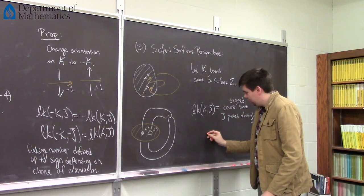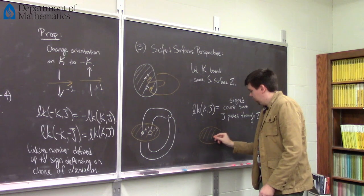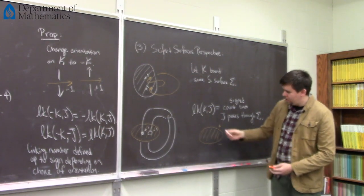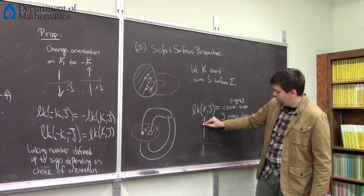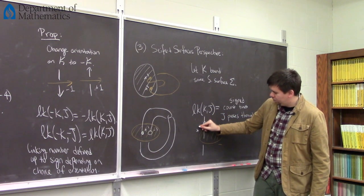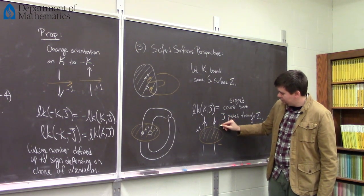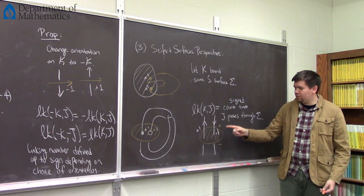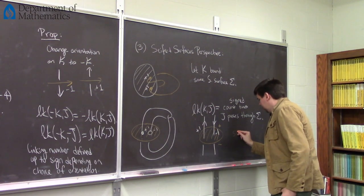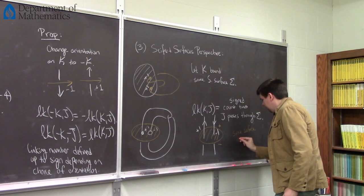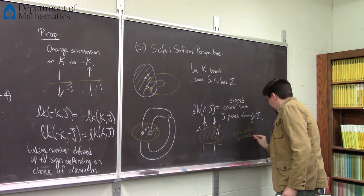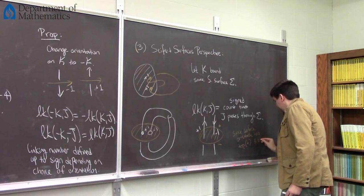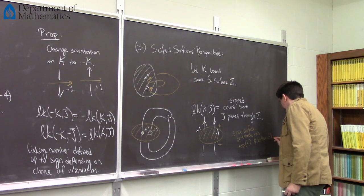So your surface has two sides to it — a top side and a bottom side. Since the surface is orientable, it has a top (the plus side) and a bottom (the minus side). Let K bound some Seifert surface sigma. The linking number between K and J is going to be some kind of signed count of times J passes through sigma — plus one from negative to positive side, minus one from positive to negative side.